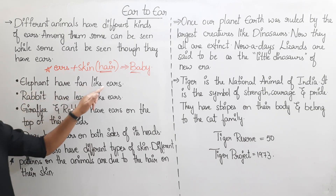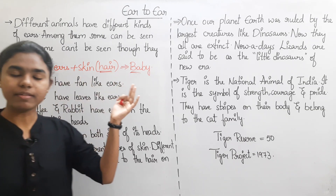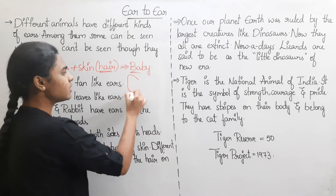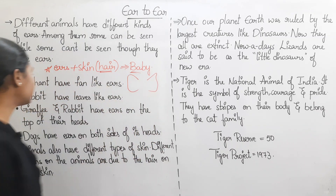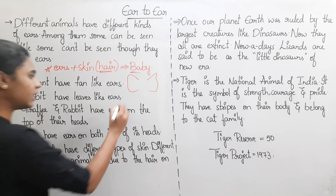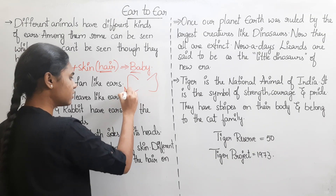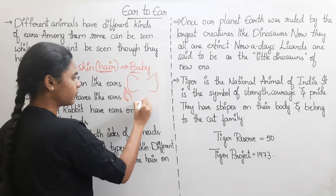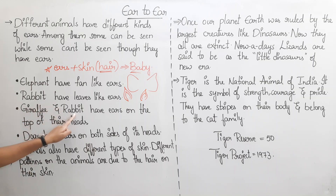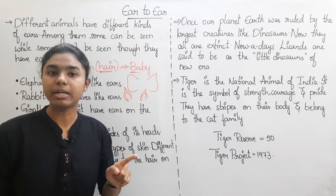Elephants have fan-like ears. Rabbits have leaf-like ears.